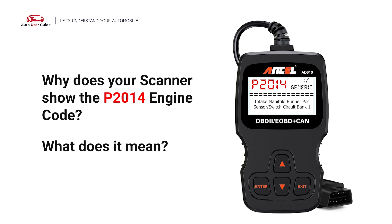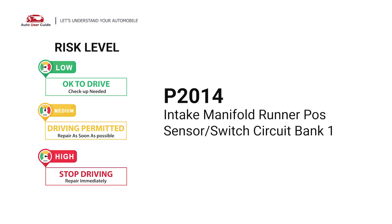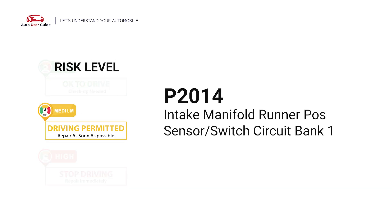Why does your scanner show the P2014 engine code? What does it mean? P2014 is a diagnostic trouble code for intake manifold runner position sensor or switch circuit bank 1.